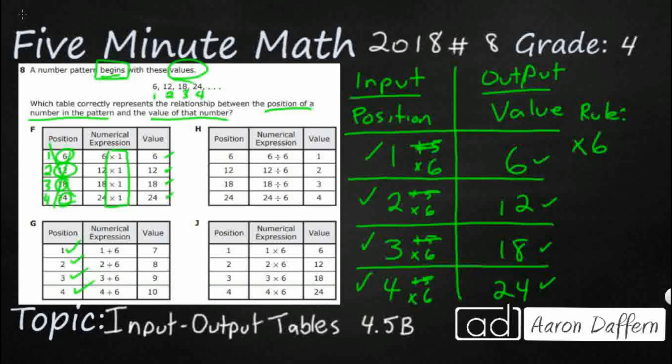But instead of multiply by 6, they get a plus 6. So their values are incorrect: 7, 8, 9, 10. We need to multiply by 6. That's why those are all incorrect, because our values are too small.